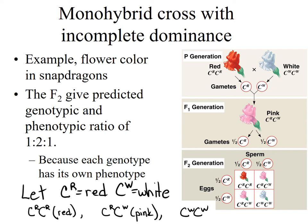But now each genotype has its own phenotype. The only way to be red is to be homozygous for the red allele, with a probability of one quarter. The probability of being pink is one half, and the probability of being white is one quarter. So instead of having a 3 to 1 ratio in a monohybrid cross, when it's incompletely dominant, you get a 1 to 2 to 1 ratio.